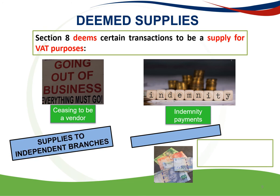The next deemed supply is supplies to independent branches. When a vendor consigns or delivers goods to an address outside of South Africa, or provides a service to a branch or main business permanently located outside South Africa and excluded from the definition of enterprise, such vendor is deemed to make a taxable supply of goods or services in the course of his enterprise. Lastly, we have fringe benefits — the provision of certain fringe benefits to employees by a vendor is a deemed supply and is therefore subject to VAT.